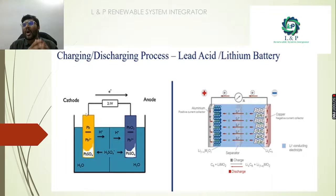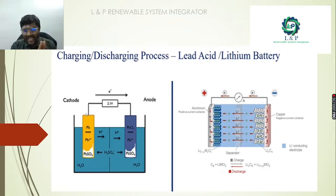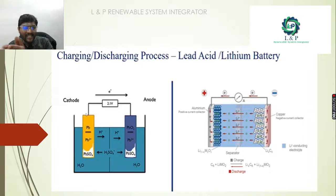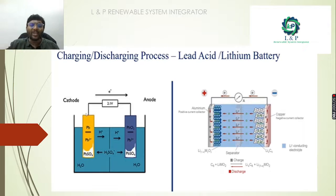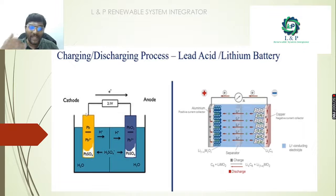Looking at how the charging and discharging process happens in a lead acid battery: we have an electrolyte that is sulfuric acid, a cathode of lead, and an anode of lead oxide. During the discharging process, electrons move from the cathode to the anode — this is the utilization process. During charging, the same reverse action happens.